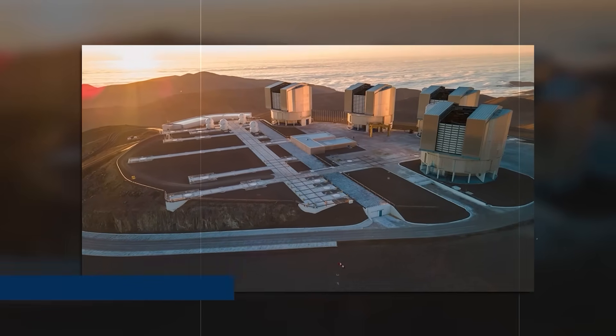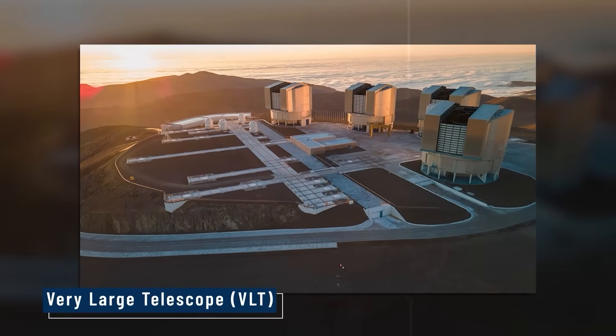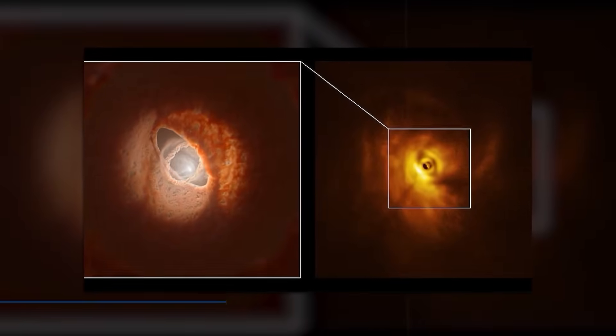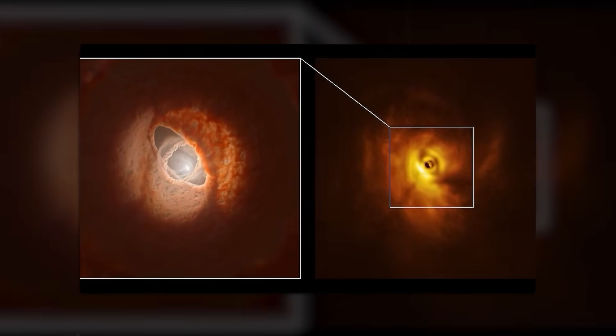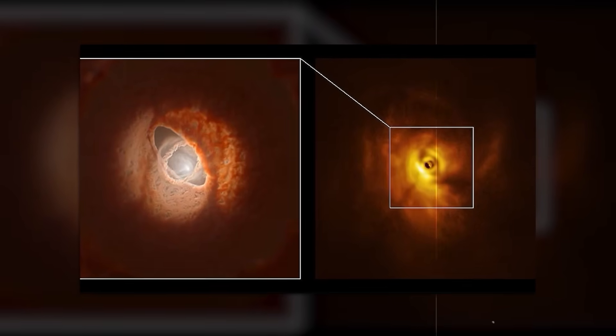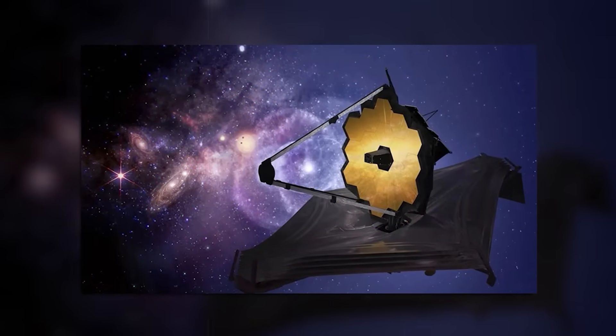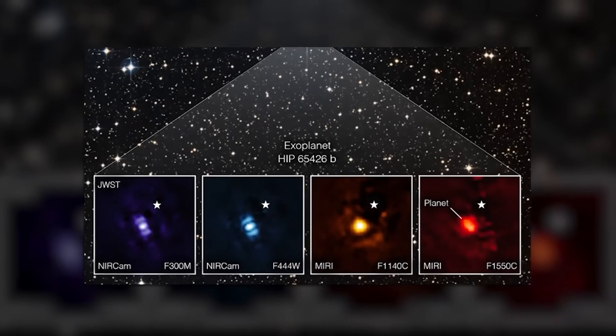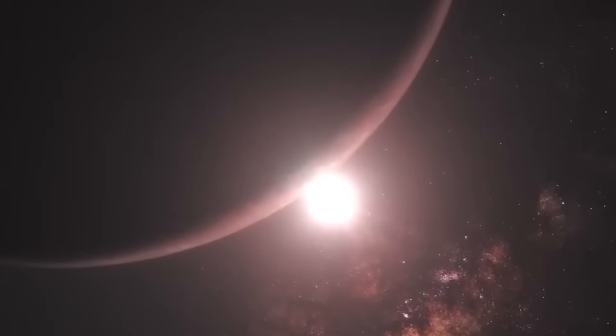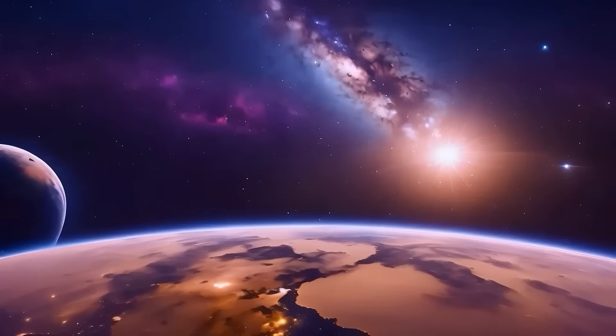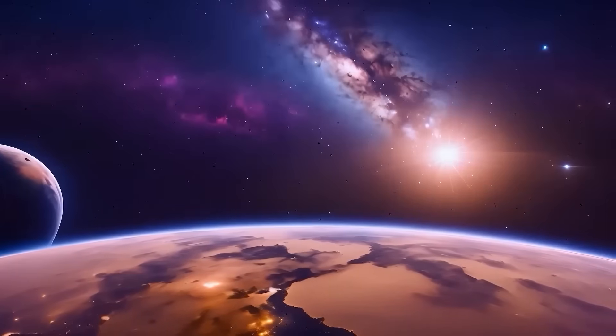But JWST didn't work alone. Ground-based telescopes like the Very Large Telescope, VLT, used instruments like SPHERE to find shadows and gaps in the disk around TWA-7. Those gaps hinted at planets. Webb followed up by imaging the system directly, confirming that the planet carving the gap really existed. By using both datasets, scientists painted a complete picture of the disk, its rings, and the planet at work within them.